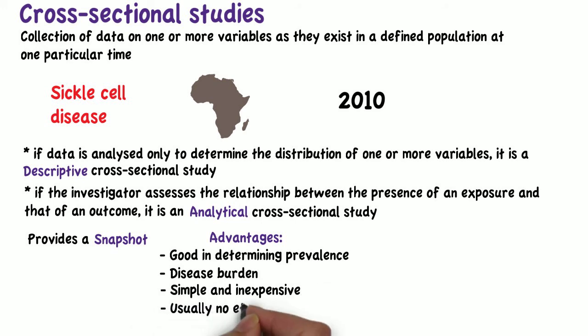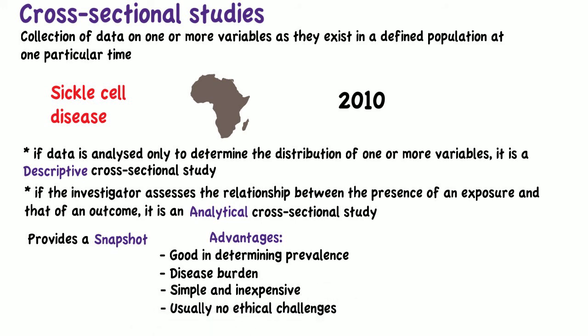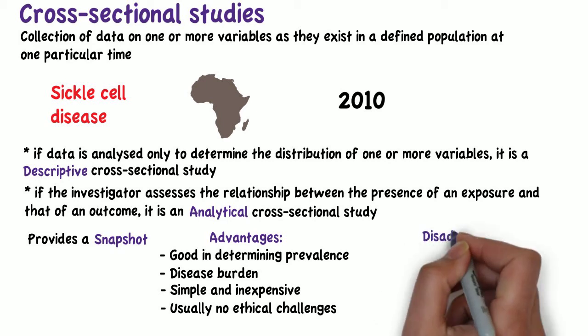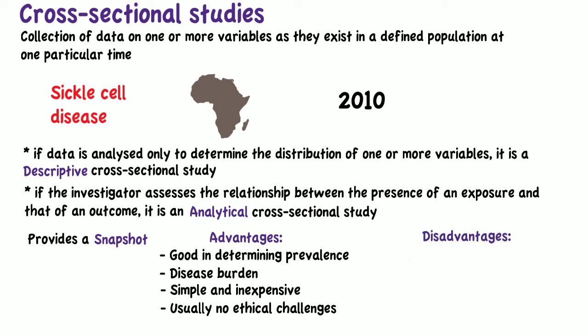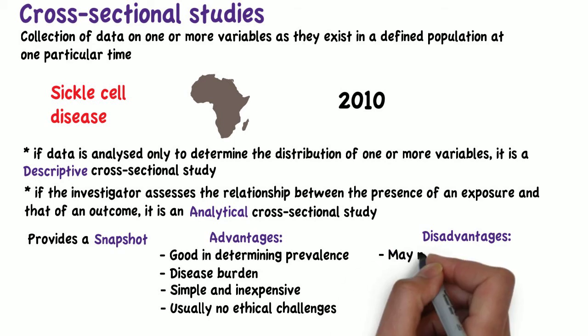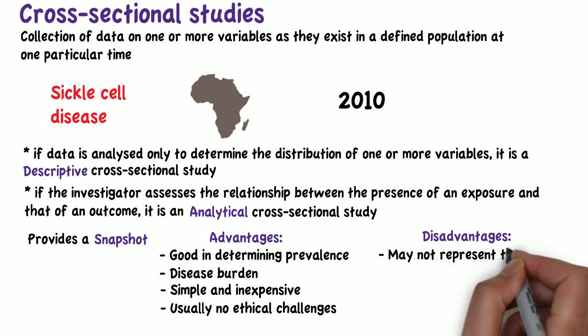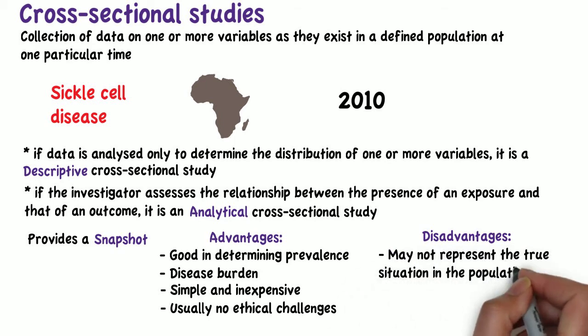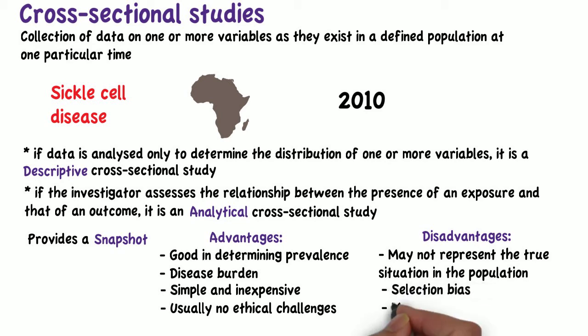Cross-sectional studies are often simple to do and inexpensive, and they do not usually pose a challenge from an ethics viewpoint. However, the results may not represent the true situation in the population, which could be due to either selection bias or measurement bias.